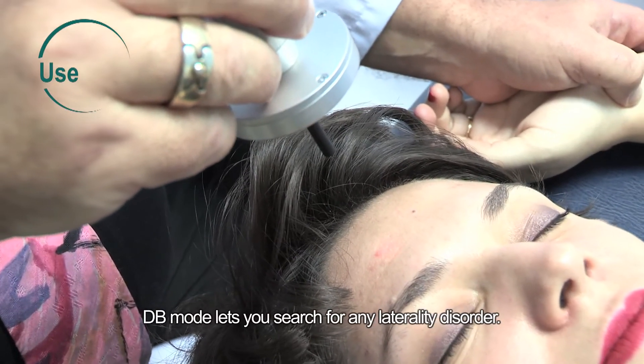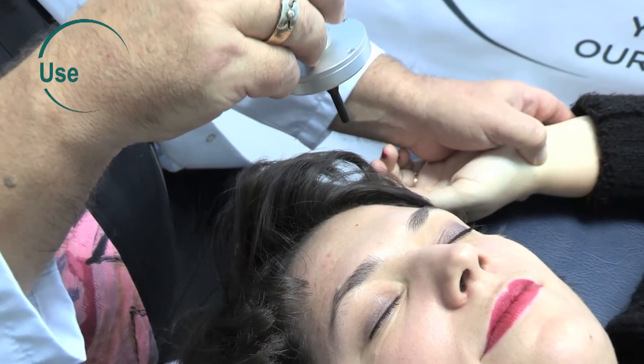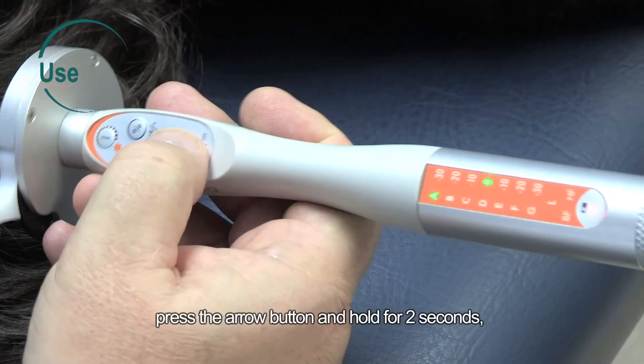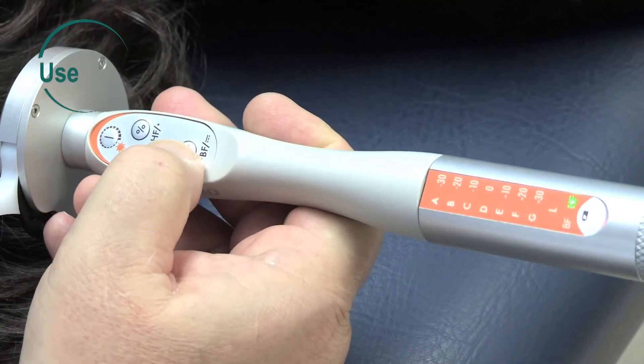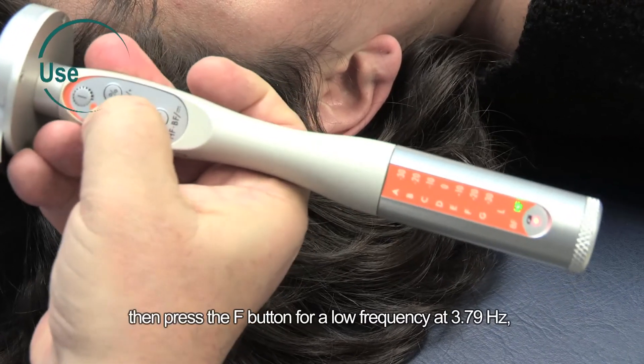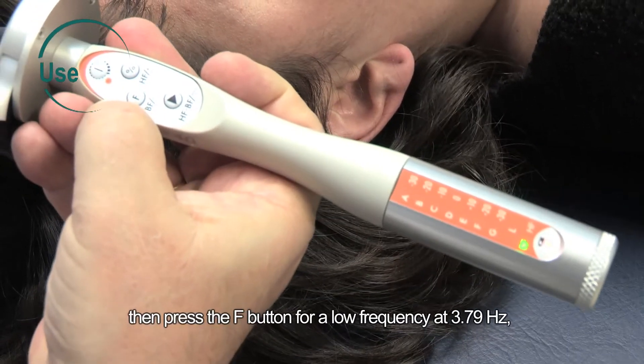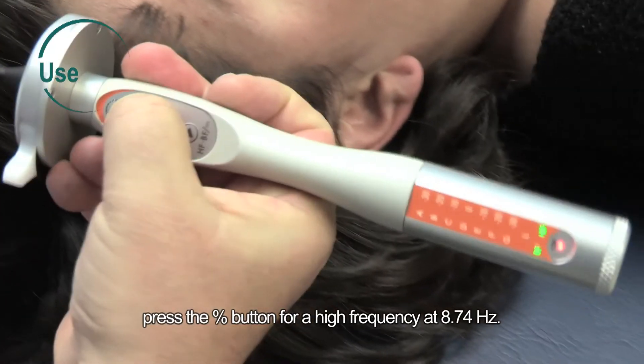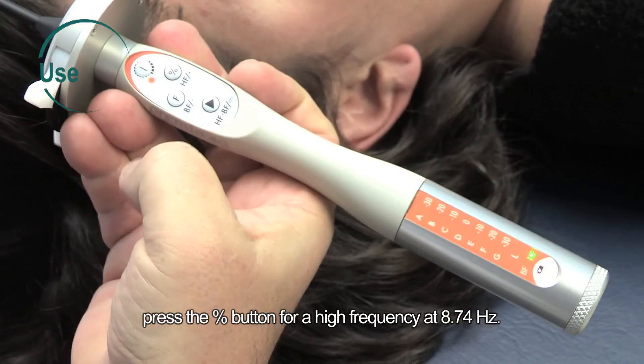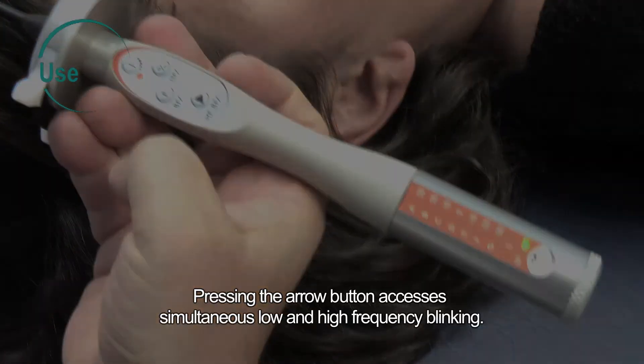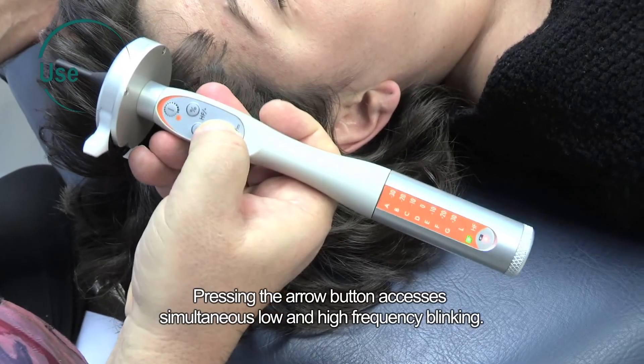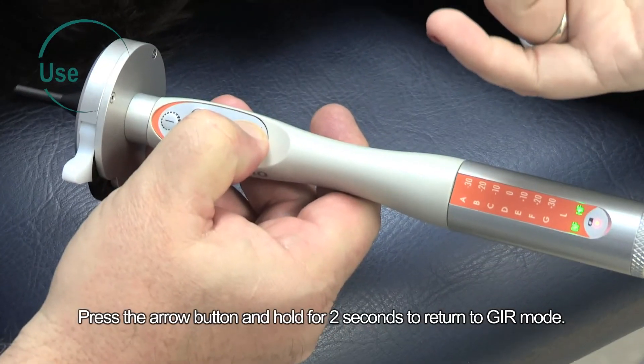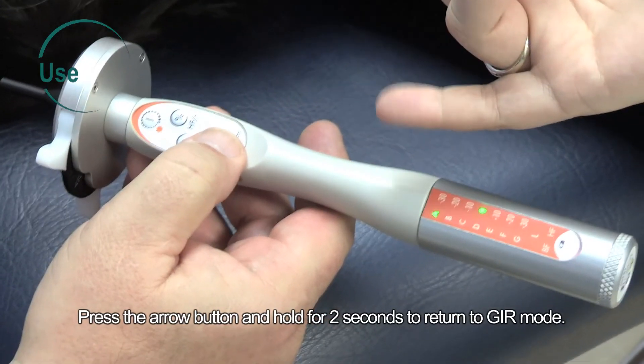DB mode lets you search for any laterality disorder. To use this mode, press the arrow button and hold for two seconds. Then press the F button for a low frequency at 3.79 hertz, or press the percent button for a high frequency at 8.74 hertz. Pressing the arrow button accesses simultaneous low and high frequency blinking. Press the arrow button and hold for two seconds to return to JIER mode.